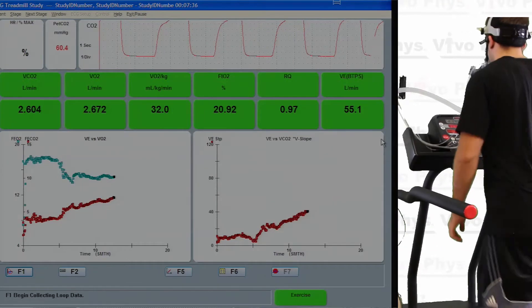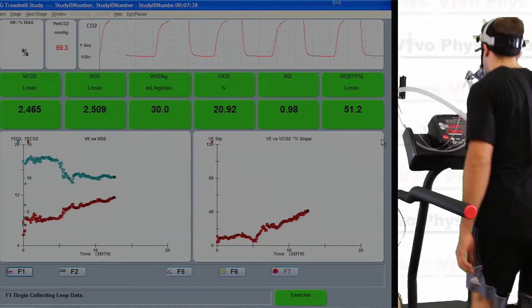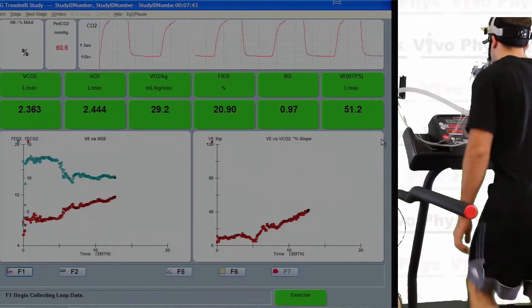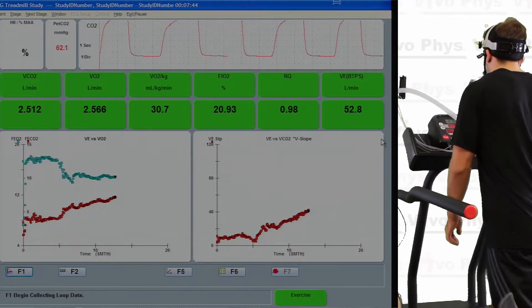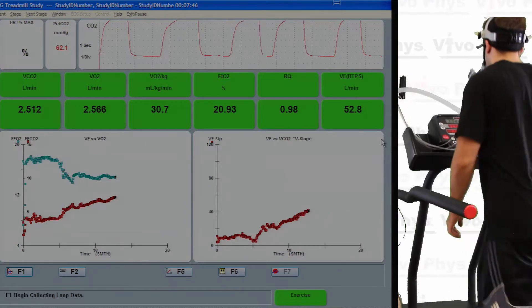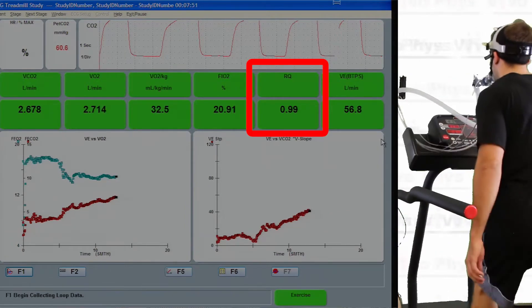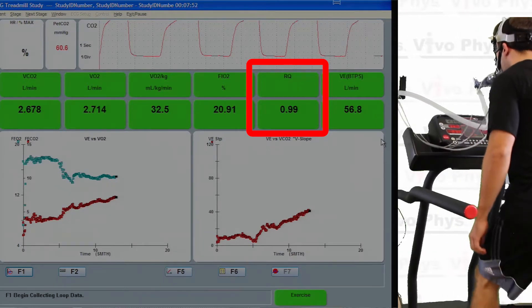For most people, a test like the Bruce protocol is fairly simple at the beginning, at least for an average reasonably healthy person. But at some point, if you watch the RQ or RER value, it's going to start to press over one.